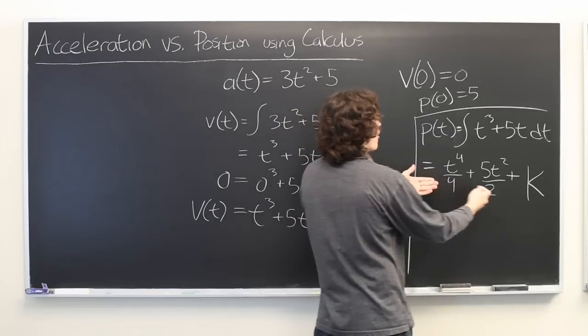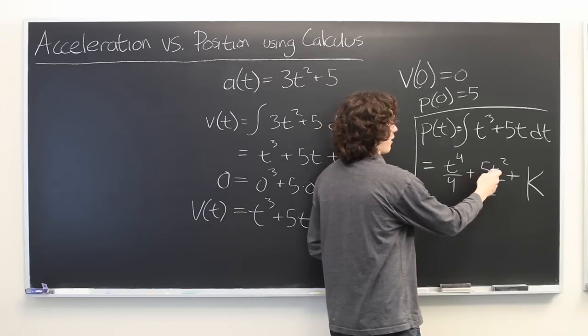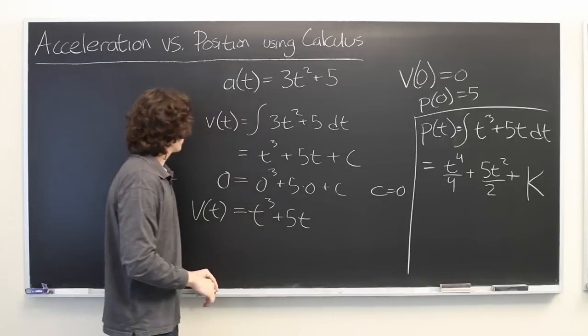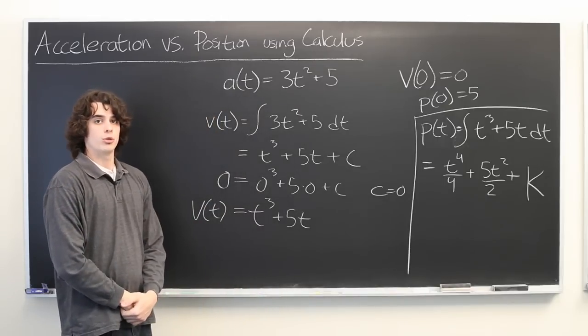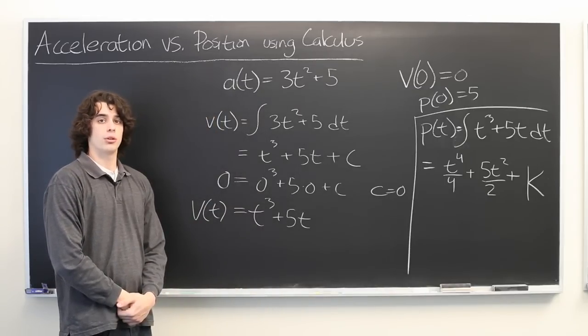So, that it is of the family of curves described by t to the fourth over 4, plus 5t squared over 2, plus some constant k. My name is Ryan Molloy, and we've just discussed acceleration versus position using calculus.